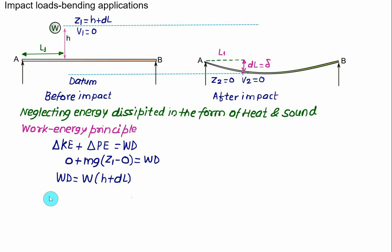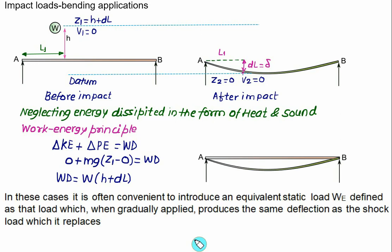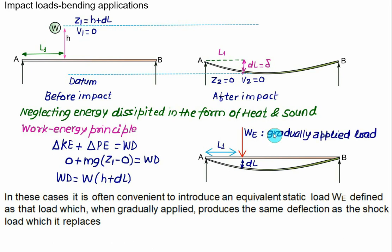So the work done stored as strain energy equals W times (h plus dl). In step two, we apply one load at the same distance l1 from A. This is called the equivalent static load We, and it is gradually applied to produce the same deflection dl at the point where the shock load is applied. For a gradually applied load, work done equals We multiplied by dl divided by 2.